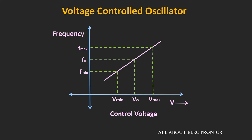As shown in the figure, F0 is the nominal frequency when the control voltage is equal to V0. When we change the voltage from Vmin to Vmax, the frequency of oscillation will change from Fmin to Fmax. If the control voltage is also varying with time, then mathematically the frequency of oscillation can be given by the expression: F0 is the nominal frequency of oscillation, Vc is the control voltage, and K is known as the tuning gain or tuning sensitivity of the VCO. It defines by what amount the frequency of oscillation will change when we change the control voltage by 1V, and it is defined in units of Hz per volt.